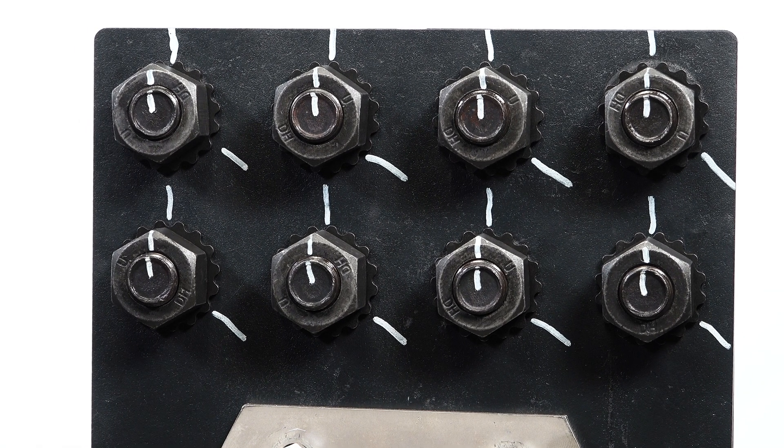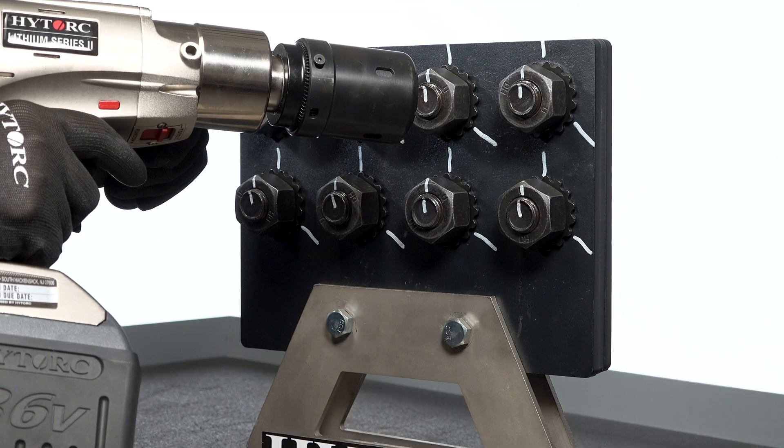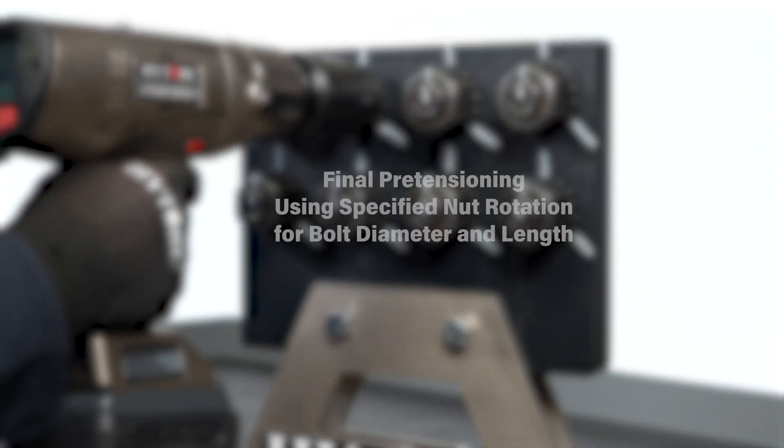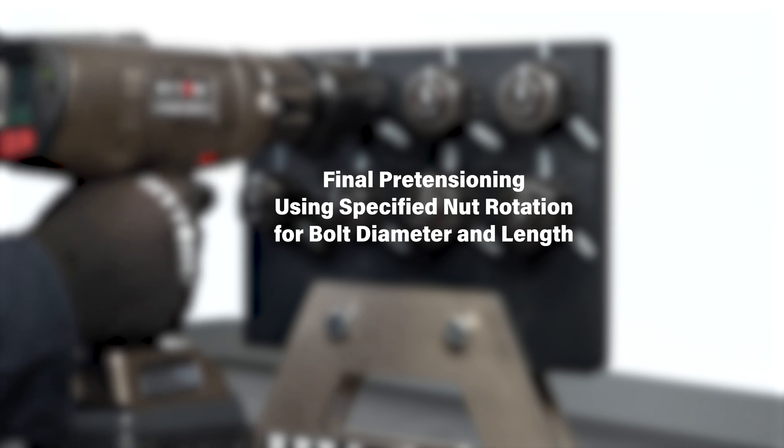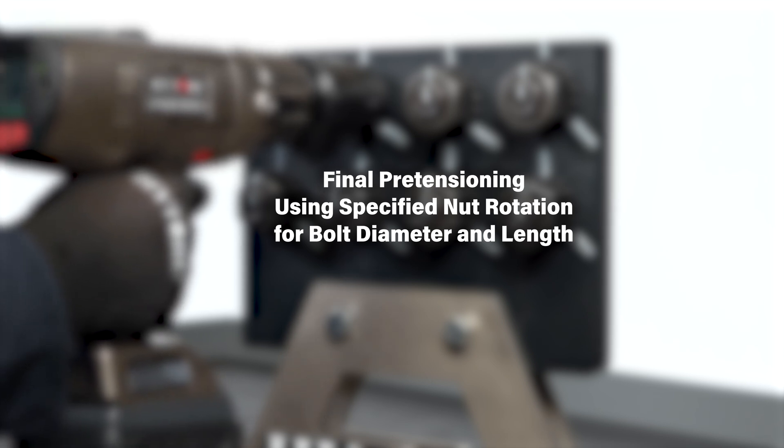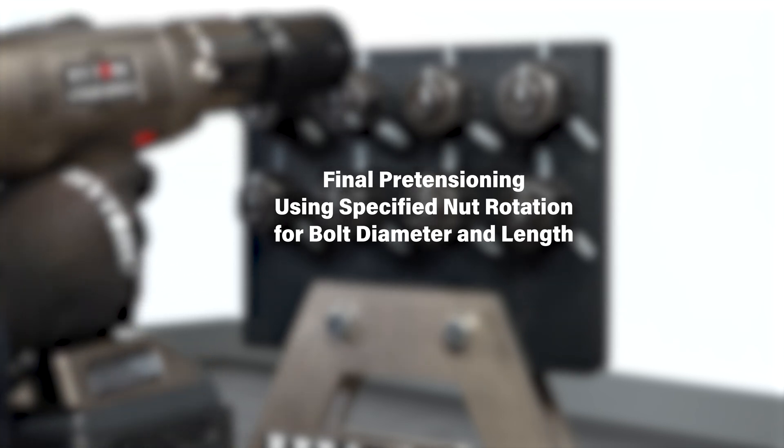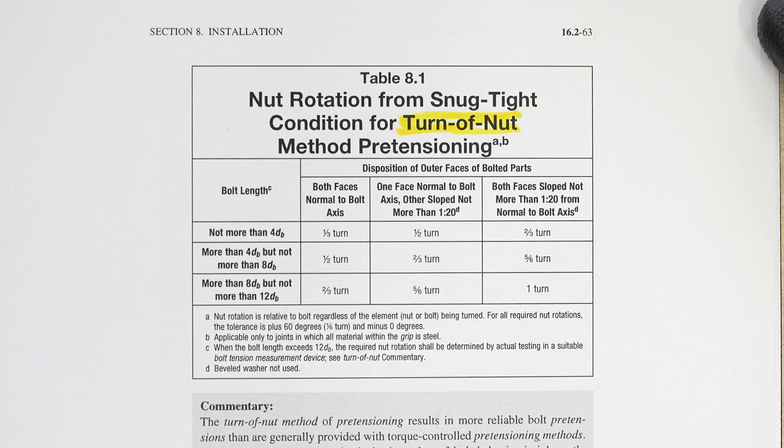After snug tightening is completed and the plies have been brought into firm contact, match marking, if required, should be performed. Once the match marking is completed, final pre-tensioning may proceed using the specified nut rotation for the bolt diameter and length combination specified in Table 8.1.